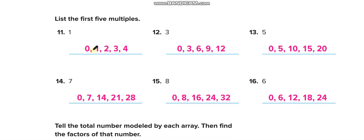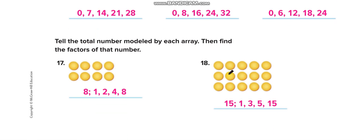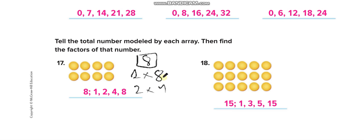Tell the total number modeled by each array. Here we have 8 counters, so find the factors of 8: 1×8 and 2×4, giving factors 1, 2, 4, 8. For the array of 15 counters, find the factors of 15: 1×15 and 3×5, giving factors 1, 3, 5, 15.